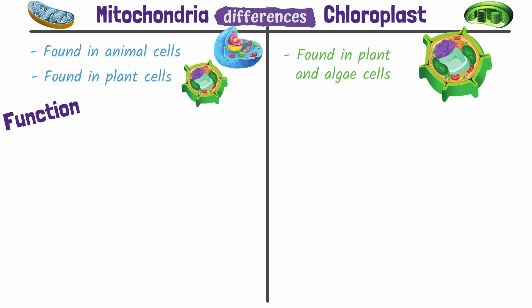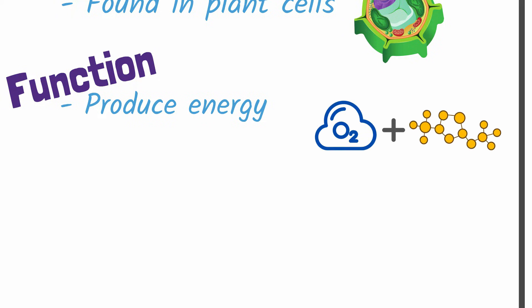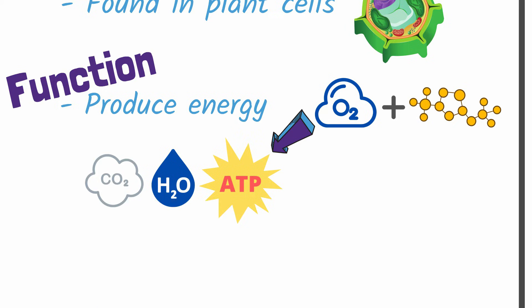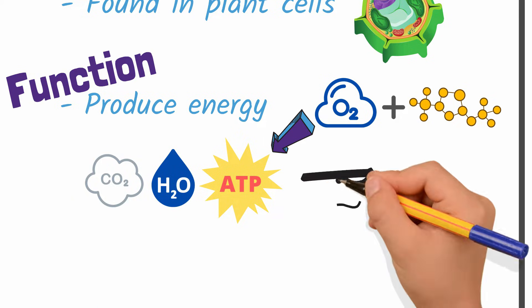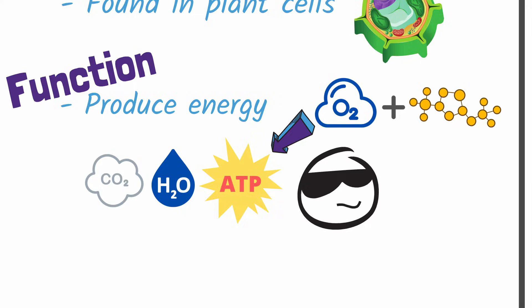Mitochondria, as I just mentioned, produce energy. They do this by utilizing oxygen to break down carbohydrates, fats, and proteins to produce carbon dioxide, water, and ATP, a very cool high energy compound.